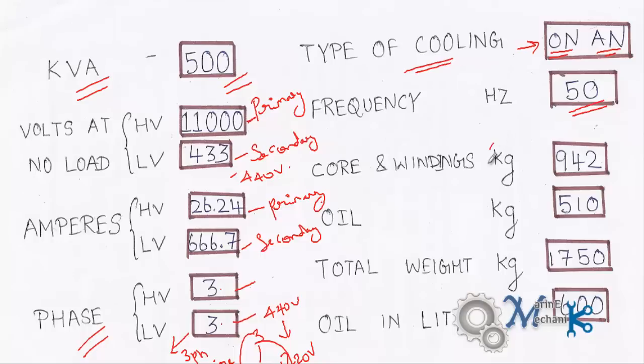And the weight of individual components is given here. The core and winding leading weight is 942 kg, just some short of a ton. Oil weight is 510 kg. Oil in liters is also given. You can see the difference: 600 liters and 510 kg. And the total weight of the transformer for transportation and handling purpose.